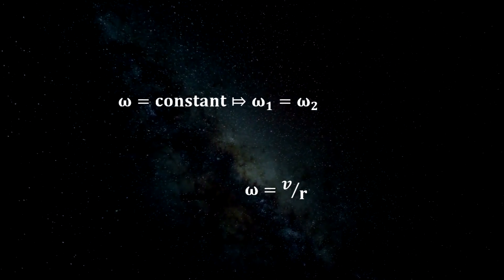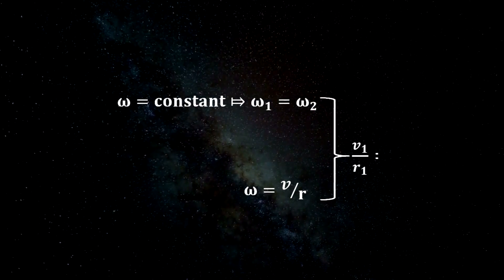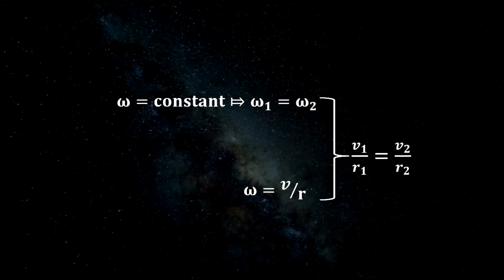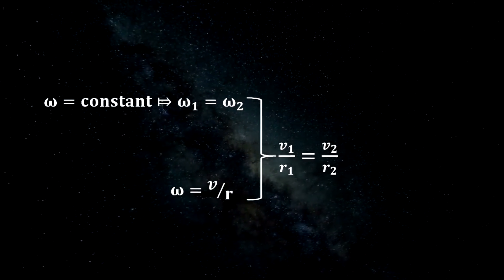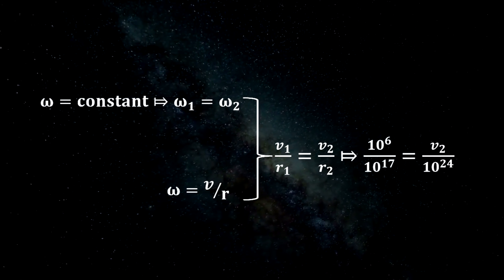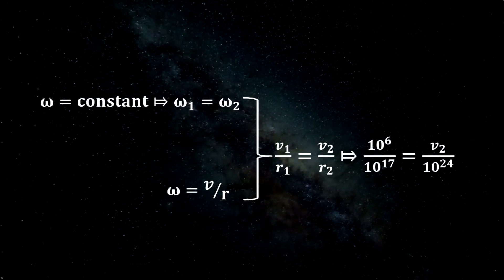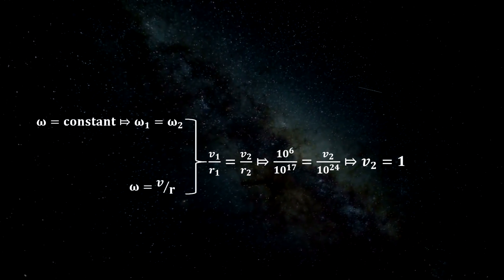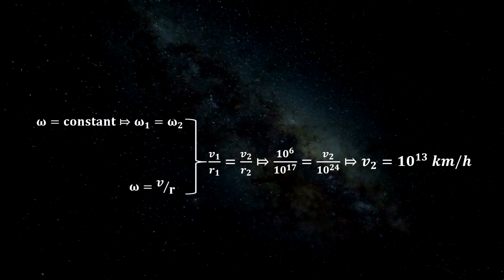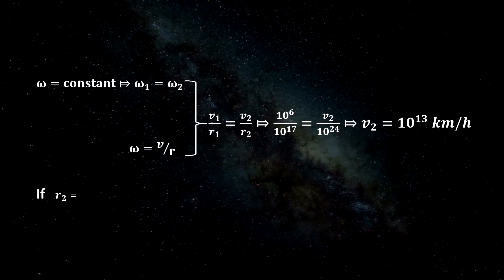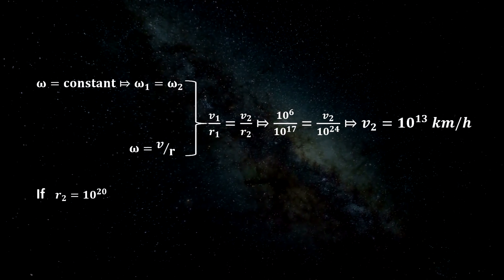And we can therefore say that the angular velocity at the edges of the Milky Way and at the edges of the observable universe is equal. If omega 1 and V1 are the speed values of celestial objects at the edges of the Milky Way, and omega 2 and V2 are the speed at the edges of the universe, we can see that V2 is at the 13th power of 10 km per hour. Thus this is 10,000 times faster than the speed of light.